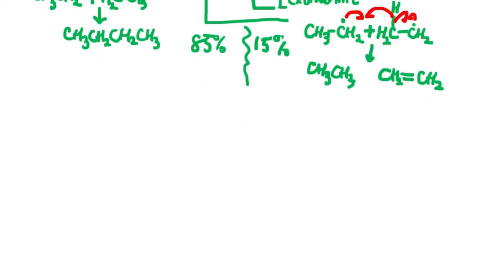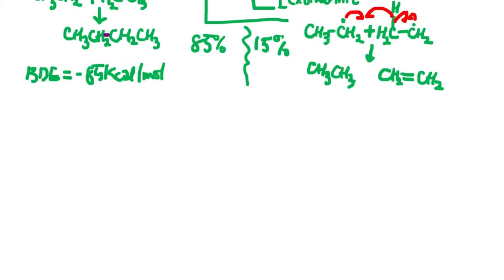Why is there such a difference in percentages? In the combination reaction, the bond dissociation energy — or in terms of the formation of a sigma bond — accounts for negative 85 kcal/mol. Since we're forming a bond, this is an exothermic reaction releasing 85 kcal/mol. However, breaking that sigma bond to form two radicals is an endothermic process requiring positive 85 kcal/mol.